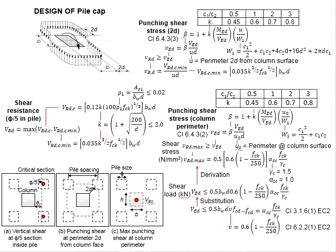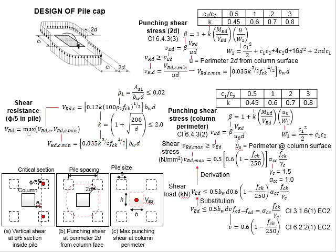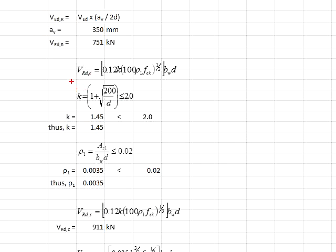This reduced shear load is to be checked against the shear resistance of the pile caps using two equations. To solve this, you need to determine k and ρ1. The k is determined by a formula as a function of d, and is obtained as 1.45.